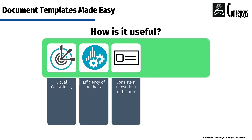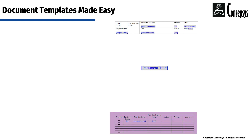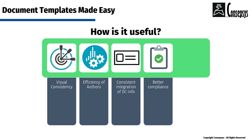Templates allow for a consistent integration of important document control metadata. For example, all documents will have a title, a number, a revision index, a status, a revision history table, etc. Templates are great for compliance too. Documents are more likely to comply with the rules if you are using templates and if authors are trained to use them.